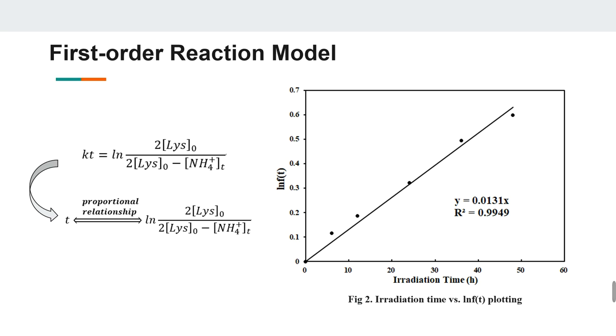Also, by using the model, we obtain a possible rate constant that is 0.0131 per hour. However, since our research is on the primary stage, more work is needed to develop a better model.